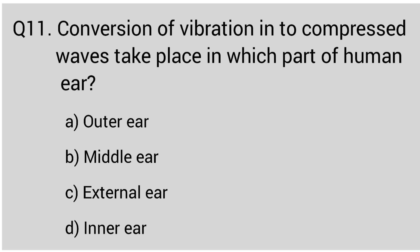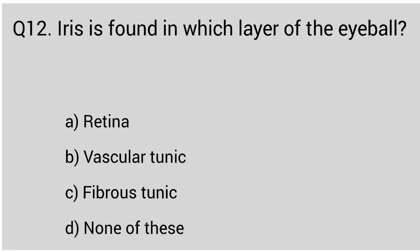Question number eleven: conversion of vibration into compressed waves takes place in which part of the human ear? The correct answer is option D, inner ear. Question number twelve: iris is found in which layer of the eyeball? The correct answer is option B, vascular tunic or vascular layer.